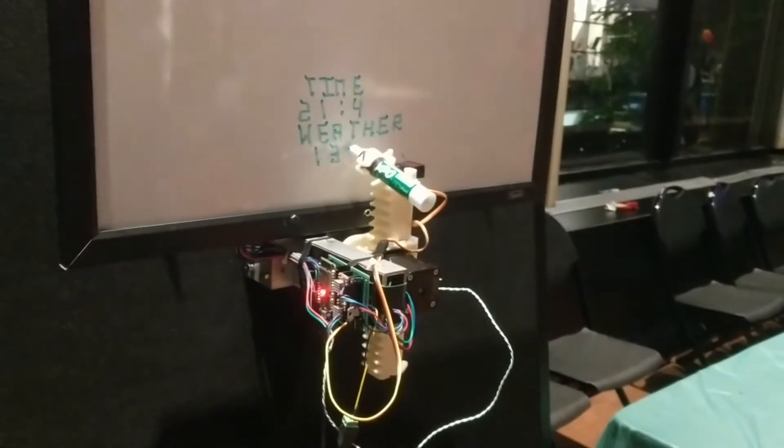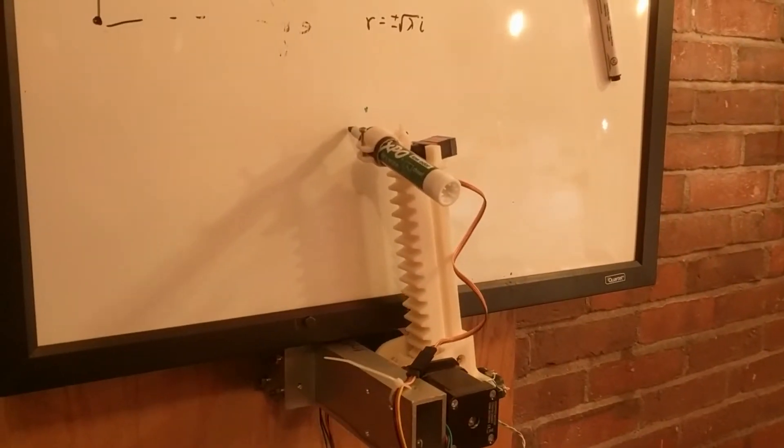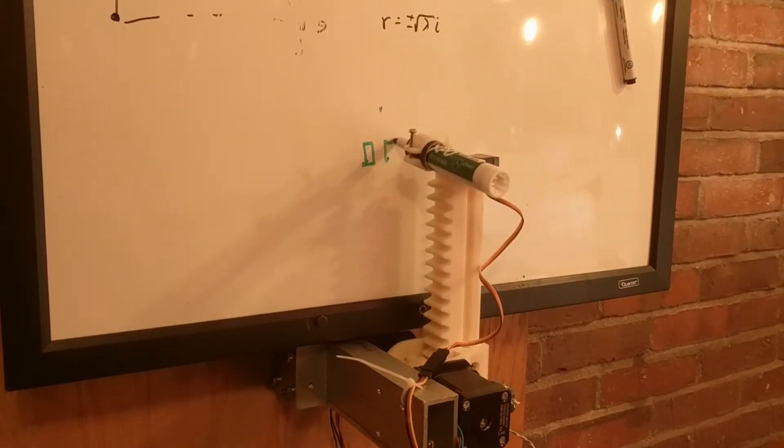But yet, even though it's working, there's lots of work left to be done. Currently, the robot essentially guesses where it is. That means that the control system of the robot is open loop.